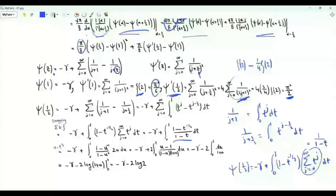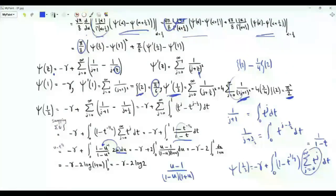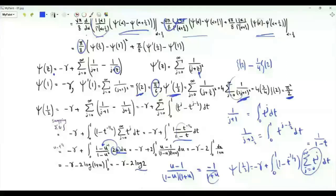Doing the substitution u equal to the square root of t, so dt equals 2u du, the ratio (1 - t^(-1/2))/(1-t) simplifies. The numerator is u - 1 and the denominator factors as (1-u)(1+u), giving minus 1/(1+u). Therefore ψ(1/2) equals -γ minus 2 times the integral from 0 to 1 of 1/(1+u) du, which equals -γ - 2 log 2.